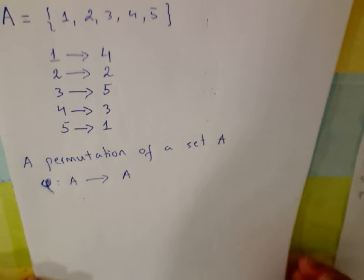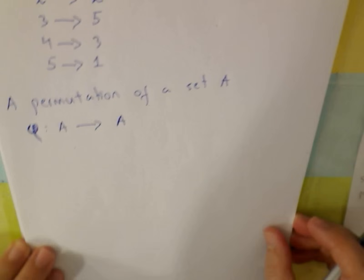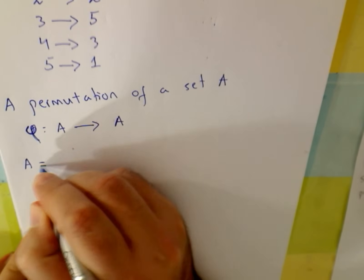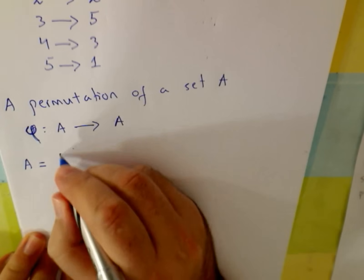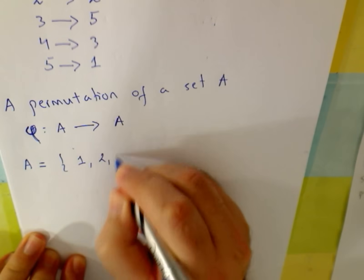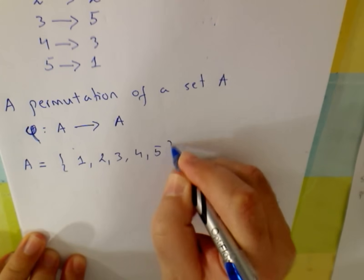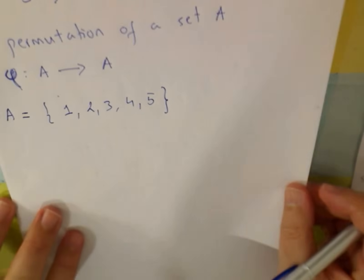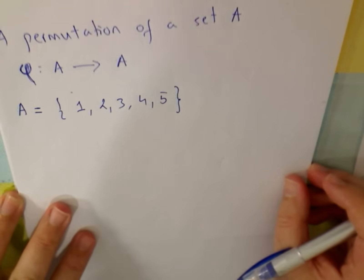Quick example. We can go back to this example. We take the same set. What was the set? 1, 2, 3, 4, 5. 1, 2, 3, 4, and 5 elements in this set.